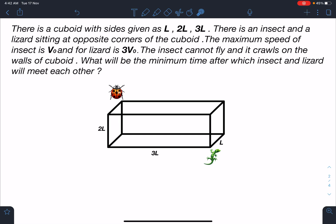There is a cuboid with sides given as L, 2L, 3L and there is an insect and lizard sitting at opposite corners of the cuboid. The maximum speed of insect is V₀ and for the lizard it is 3V₀. The insect cannot fly and it crawls on the walls of the cuboid. So the question is what will be the minimum time after which insect and lizard will meet each other.